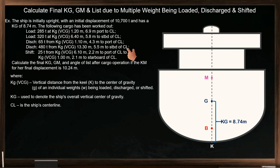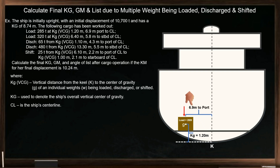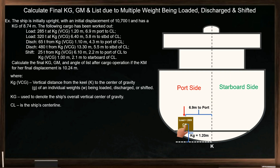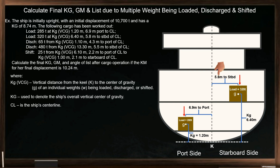CL represents the ship's centerline. We have 285 tons of cargo being loaded in the lower hold, assuming the weight's center of gravity is at this point. The weight's kg is 1.20 meters, and positioned 6.9 meters port of the centerline — assuming this is port side and this is starboard side. Always measure from the weight's center of gravity. Next, load 320 tons of cargo into the tween deck at a vertical center of gravity of 6.40 meters, positioned 5.8 meters starboard of the centerline.